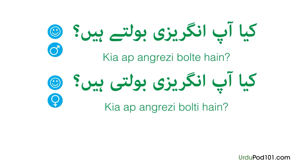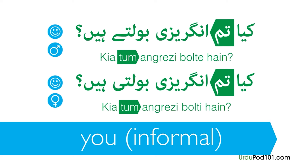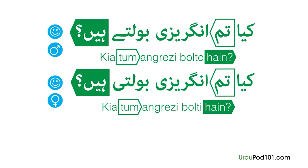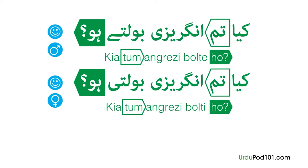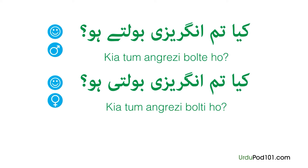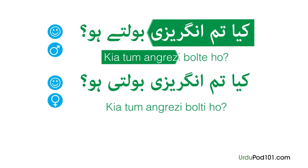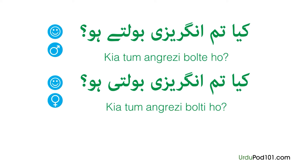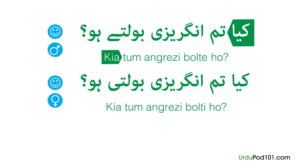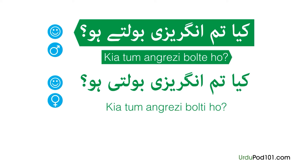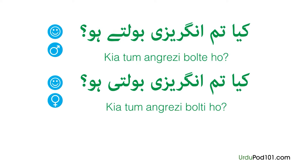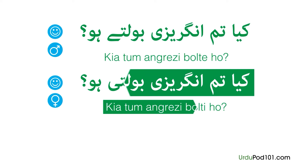Now let's make this sentence informal. First, we need to use the informal version of 'you,' which is tum. If we change the word for 'you,' we will also change the sentence ending particle to ho. Everything else stays the same. When speaking to younger people, it's acceptable to use this informal form. In which case you will say: Kya tum angrezi bolte ho? to ask a young man or boy, and Kya tum angrezi bolti ho? when asking a young woman or girl.